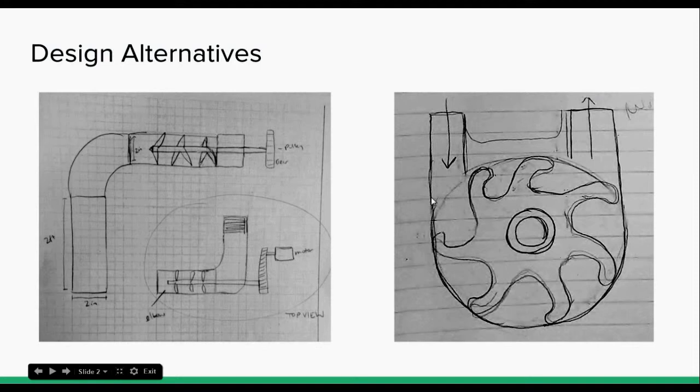And radial pumps, after some research we found, are generally good for situations where you need more head and a lower flow rate, so we didn't think that would be suitable. And then axial flow pumps are generally good for situations that require low head and a higher flow rate.